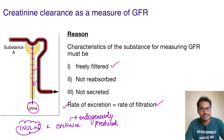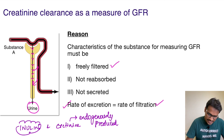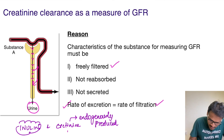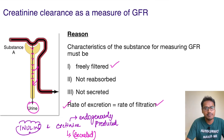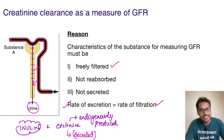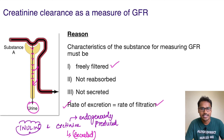The only disadvantage with creatinine clearance is that there is some amount of creatinine which is being secreted, but this amount is very minimal. So creatinine is still considered a better option for calculating the glomerular filtration rate.